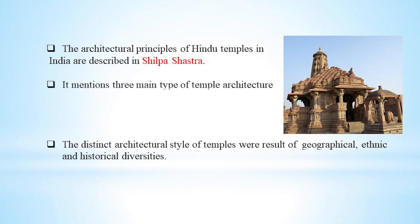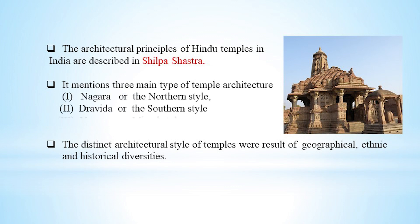Shilpa Shastra mentions three main types of temple architecture: first is Nagara, second is Dravida, third is Veshara type. These different architectural styles evolved as a result of the geographical, ethnical and historical diversity of India.